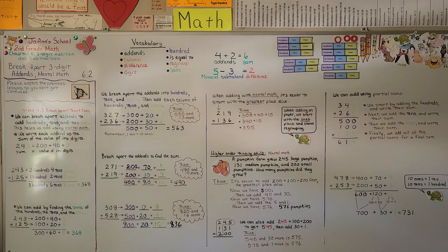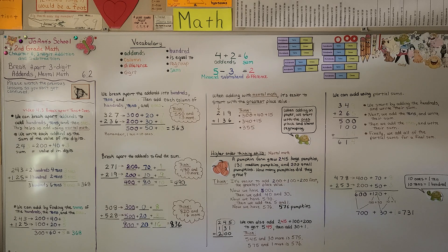Having your basic addition and subtraction facts to 20 memorized — so that you can answer 9 plus 6 or 17 minus 8 as quickly as you know 1 plus 1 is 2 — will make your mental math even faster and all math easier.